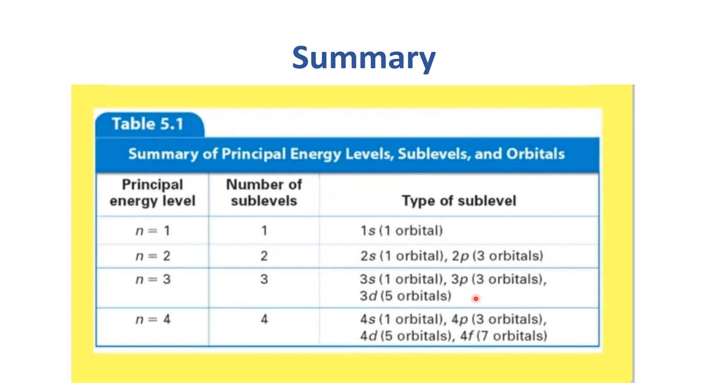Similarly, if the principal quantum number is 3, then there would be 3 sub-levels: 3s, and 3p, which is further divided into 3 orbitals.